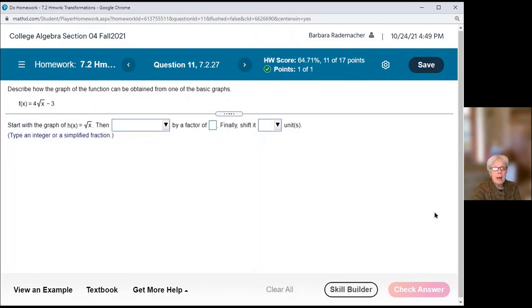All right, here we are back with the second part, the continuation of doing the homework. Number 11, we have f of x equals 4 times the square root of x minus 3. Well, the basic function is the square root of x.